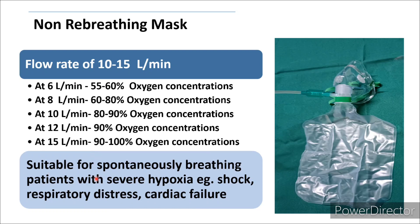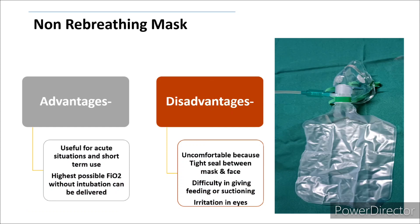The NRM is used when the patient has spontaneous breathing with severe hypoxia — for example, in shock, respiratory distress, or cardiac failure. Advantages: useful for acute situations and short-term use; the highest possible FiO2 without intubation can be delivered. Disadvantages: uncomfortable because a tight seal is required between the mask and the face; difficulty in giving feeding and suctioning; and irritation in the eyes can occur.